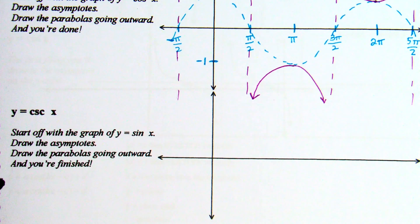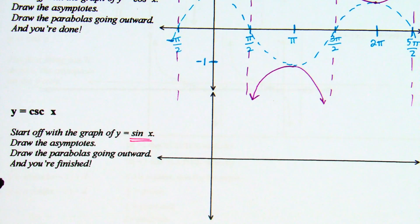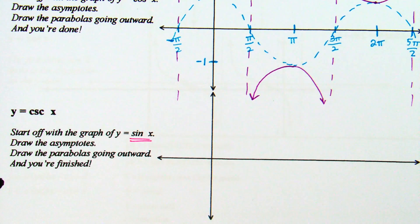So when we graph sine, what is the length or cycle of sine? Sine and cosine both go 2 pi, right? So we're going to graph up to 2 pi — over to 2 pi. Up to the number 2 pi, but it is an over direction.